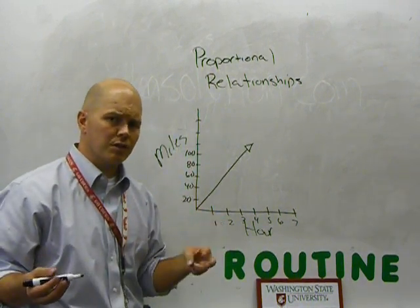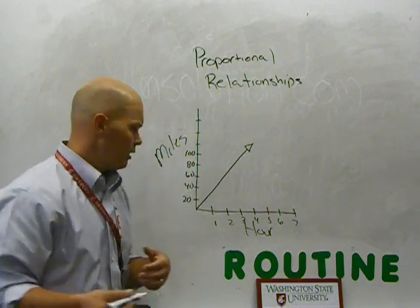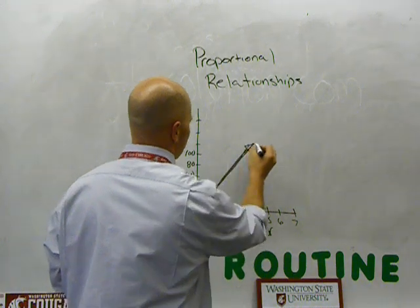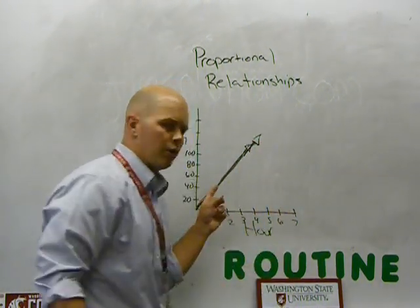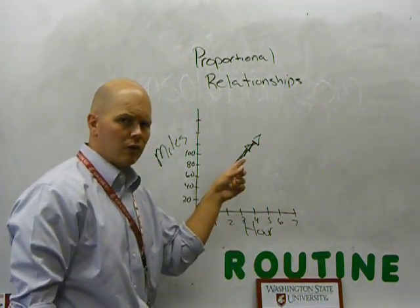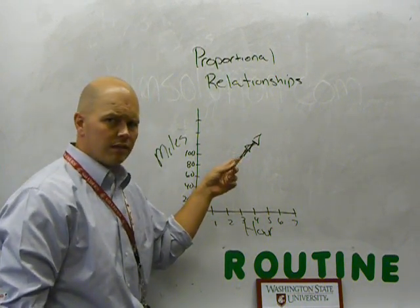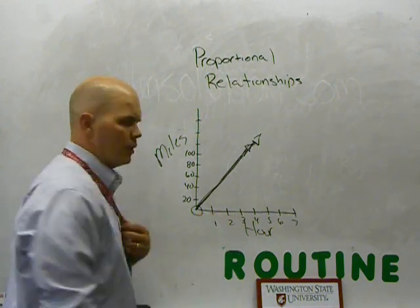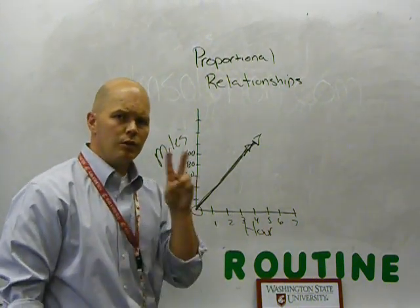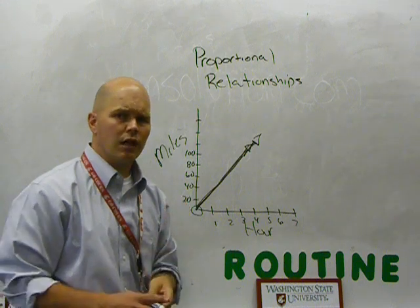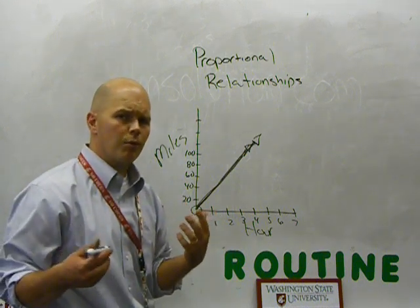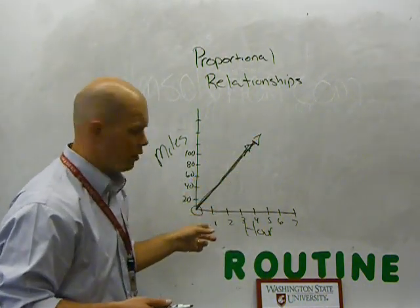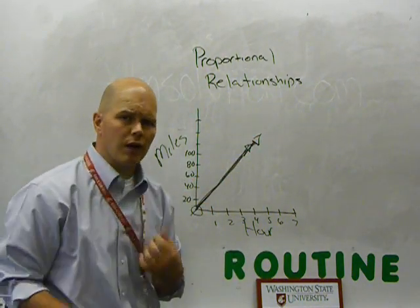In all graphs, proportional relationships had two things in common. Those two things were: that's a straight line — we have a straight line right here, so no matter what, the slope of this line is straight, which means it has a constant factor. And then it came through this point at the origin. So the two main things we took out of class was, for a graph to be proportional, it had to have a straight line and go through the origin, which is (0,0) on the graph.